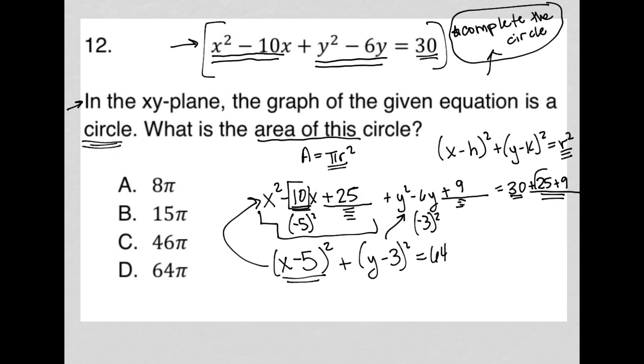So we know that 64 is in our, let's use a different color for emphasis, our r squared position. So we know that r squared is equal to 64, but we can then square root both sides, and we get r is equal to 8.